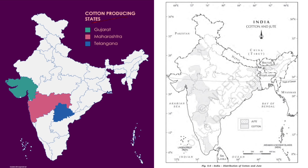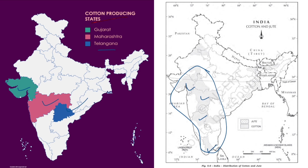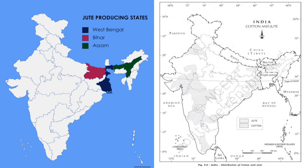Next is cotton producing states. In leading states it is Gujarat, Maharashtra and Telangana — adjacent to each other. Gujarat would be the perfect answer. We can also see some parts of Andhra Pradesh and Tamil Nadu. Next is jute producing states. The major three are West Bengal, Bihar and Assam — West Bengal being the most prominent. In major producing states we can also see some parts of Odisha.